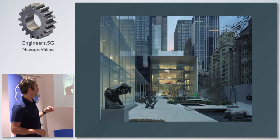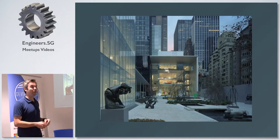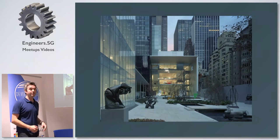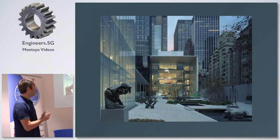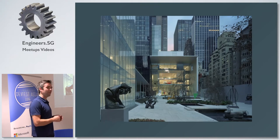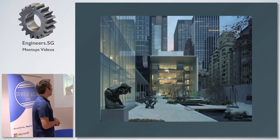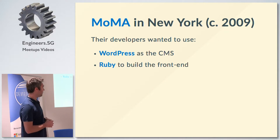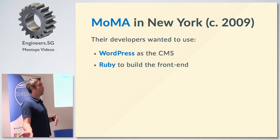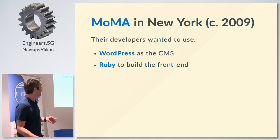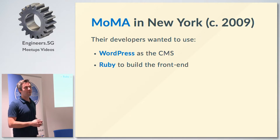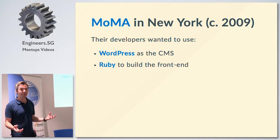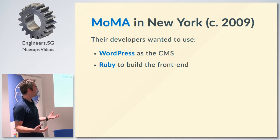This is the first time I ever came across a REST API for WordPress. Although there's a plugin that's going to become part of WordPress with the next release, the actual history of REST APIs in WordPress goes back further. This is the Museum of Modern Art in New York — MoMA. In 2009, their developers wanted to use WordPress as the CMS but wanted to use Ruby to build the front end, because that was their team's skill set.